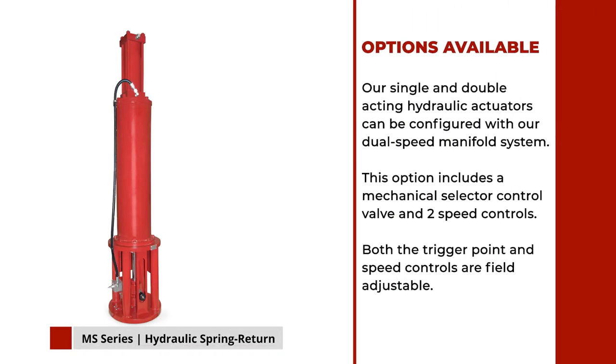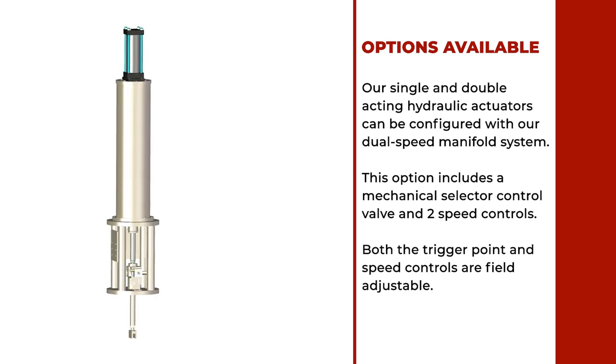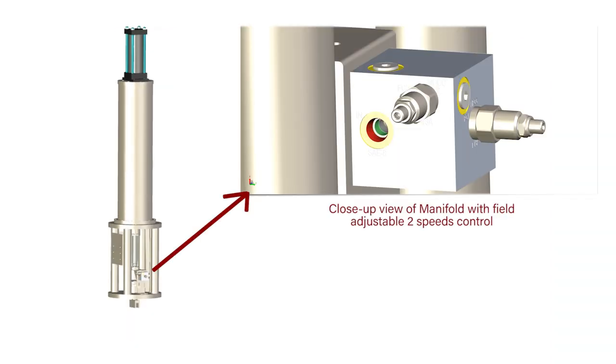Our single and double acting hydraulic actuators can be configured with our dual speed manifold system. This option includes a mechanical selector control valve and two speed controls. Both the trigger point and speed controls are field adjustable. The manifold block is mounted to the pedestal.